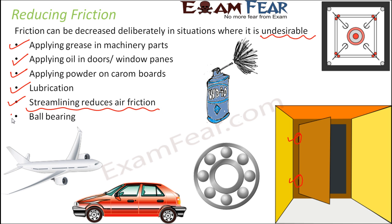Ball bearing is another method to reduce friction. Inside a machine you may have a fixed outer plate and an inner plate that is moving — constantly there is friction between these two plates as the inner plate moves on the surface of the outer plate. To solve this, you make sure the two plates are not in direct contact, and in between the empty spaces you put some balls. As the inner plate moves, the balls keep moving over one another, and the direct friction between the two plates gets avoided. This way the adverse effects of friction can be reduced.